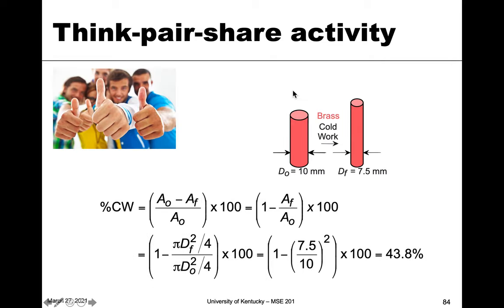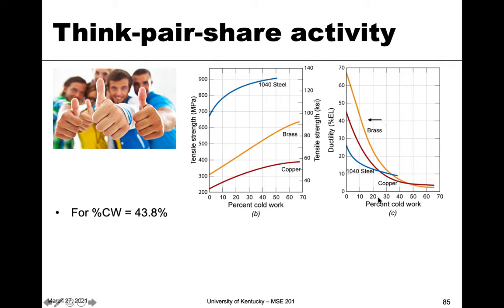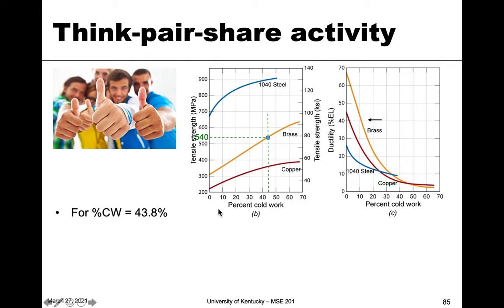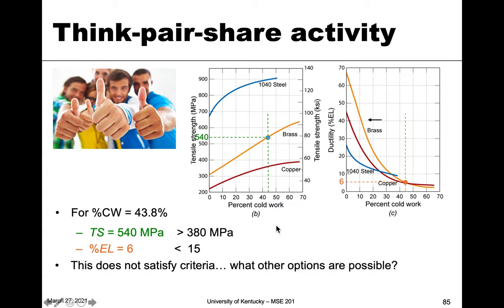Now looking at ductility — at 43.8 percent cold work, we read the elongation curve for brass and we get around 6 percent. Six percent is less than the 15 percent we need. So if we draw the rod directly from 10 to 7.5 millimeters, we do not meet the design criteria: tensile strength is fine, but ductility is too low.